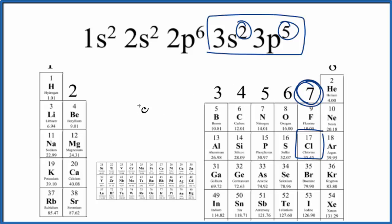If we wanted to draw the Lewis structure, we would write Cl and put seven valence electrons around it. This would be the Lewis structure for chlorine.